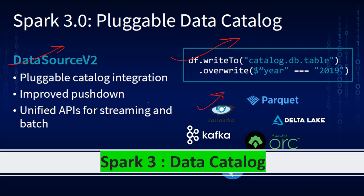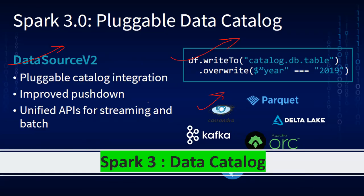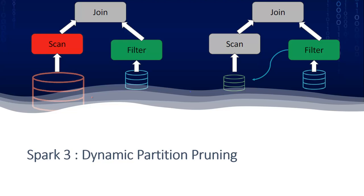Next is improved pushdown. In current versions, we have support for predicate pushdowns to optimize queries, but with Spark 3 this is enhanced. The first major improvement is Adaptive Query Execution (AQE), which makes smart decisions at runtime rather than always falling back to sort-merge joins. It can analyze tables and based on their size, convert expensive sort-merge joins into broadcast joins wherever applicable. AQE is one of the key SQL optimization features in Spark 3.